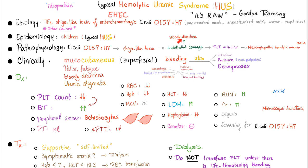Endothelial damage inside the GI epithelium leads to bloody diarrhea. Endothelial damage in blood vessels leads to platelet activation — platelets adhere on top of the injured endothelium, which leads to microangiopathic hemolytic anemia as red blood cells get sheared. Clinically, mucocutaneous bleeding can happen although many patients are asymptomatic for that. Pallor and fatigue occur because of the anemia. Bloody diarrhea is the most important clinical feature. Uremic stigmata — all the signs and symptoms of acute kidney failure — can happen here.